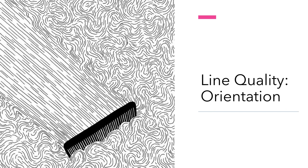Diagonal lines and curving lines imply motion and movement, as you can see in this image. Vertical lines — lines that go straight up and down — imply the potential for change. They act in our minds like a stack of blocks, with a strong potential to topple or fall over. They just appear more unstable than the other types of lines.